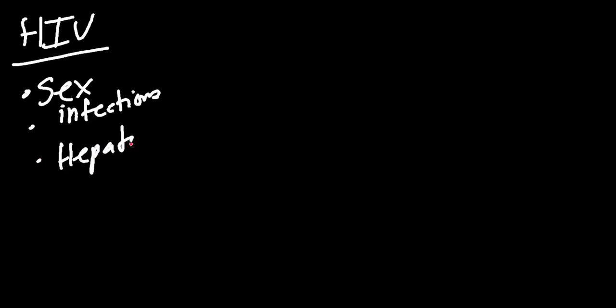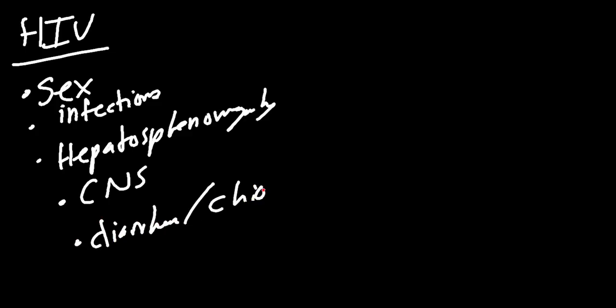Remember, we're still in our TORCHES acronym. There are two H's. The next H is going to be HIV. HIV is transmitted sexually. You're going to see recurrent infections if their immune system is knocked out through those T helper cells, the CD4-positive cells. You're going to see recurrent infections, hepatosplenomegaly, CNS issues, cranial problems, you're going to see diarrhea, more like a chronic diarrhea. That's about all I have to say for that. Just remember that HIV and HSV are both perinatally acquired infections.